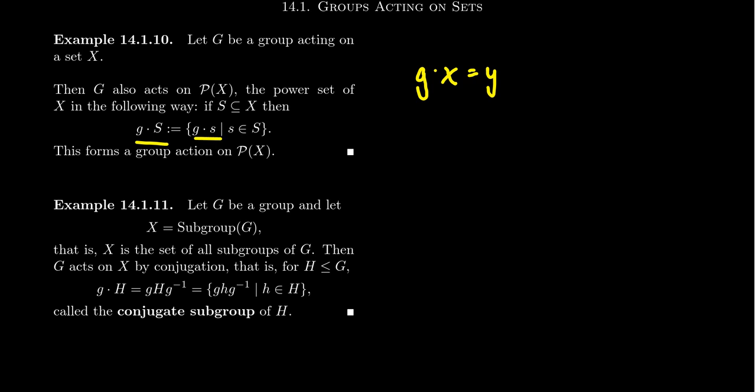So G dot S is going to be the collection of all the elements of the form G dot little s, where little s is allowed to vary over all the elements of the set. And so to prove that this is a group action,